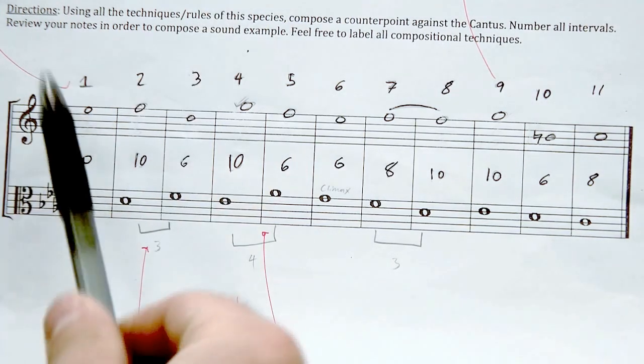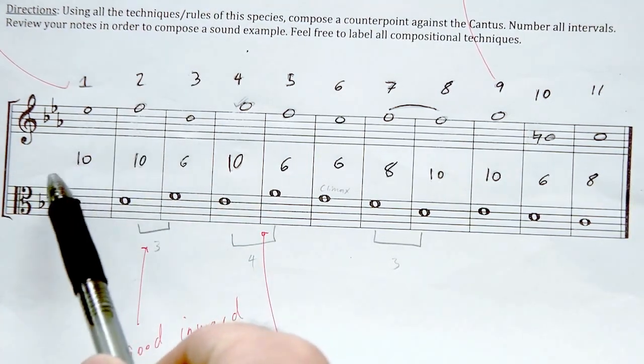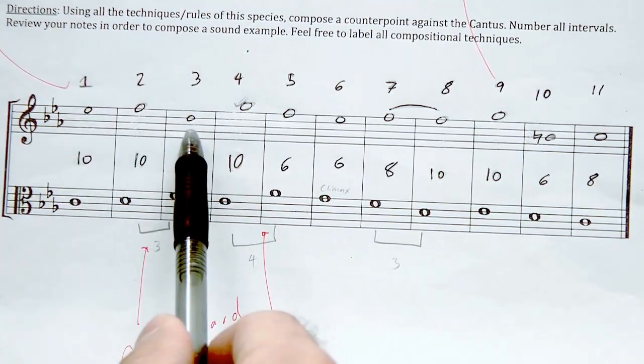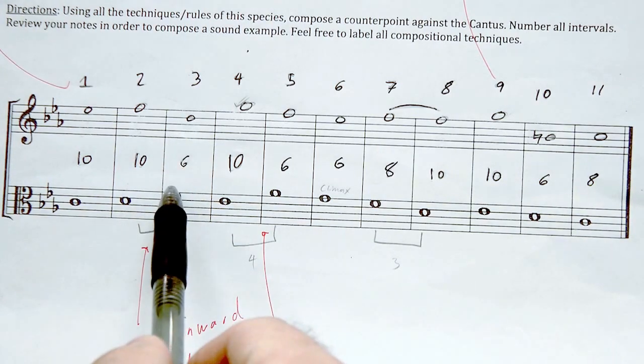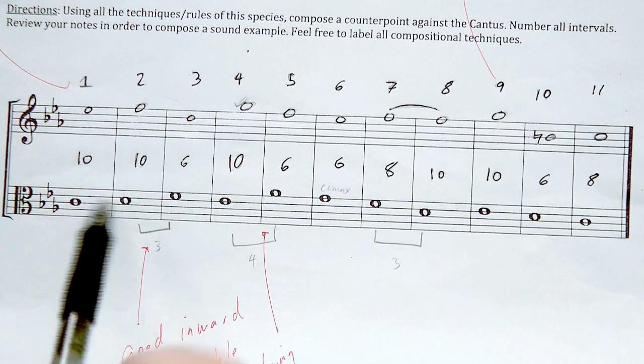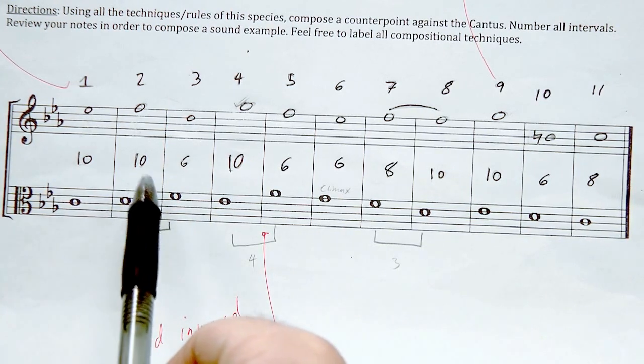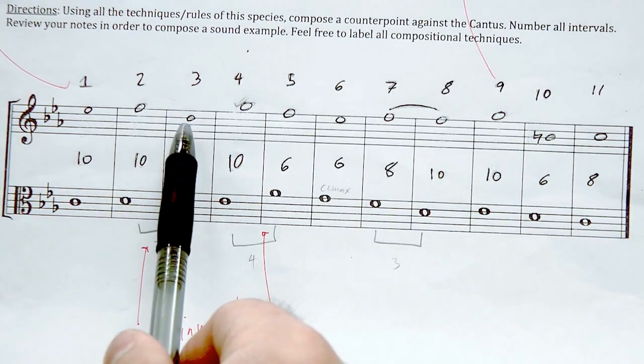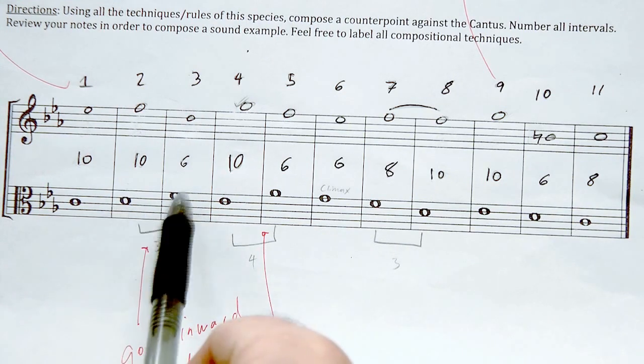You'll note the use of parallel tenths from measure 1 to 2. He leaps down in his counterpoint, the cantus leaps up. Here's a very delicate situation when you're heading into the use of double skips. But he makes it possible by skipping no more than a third in his counterpoint. At the same time, the cantus skips no more than a third.